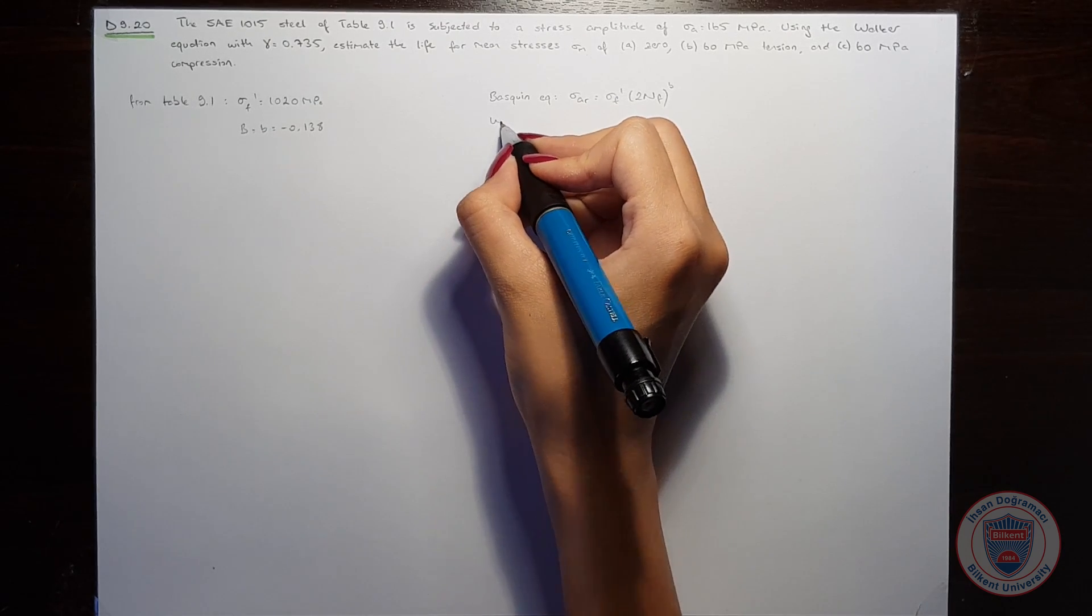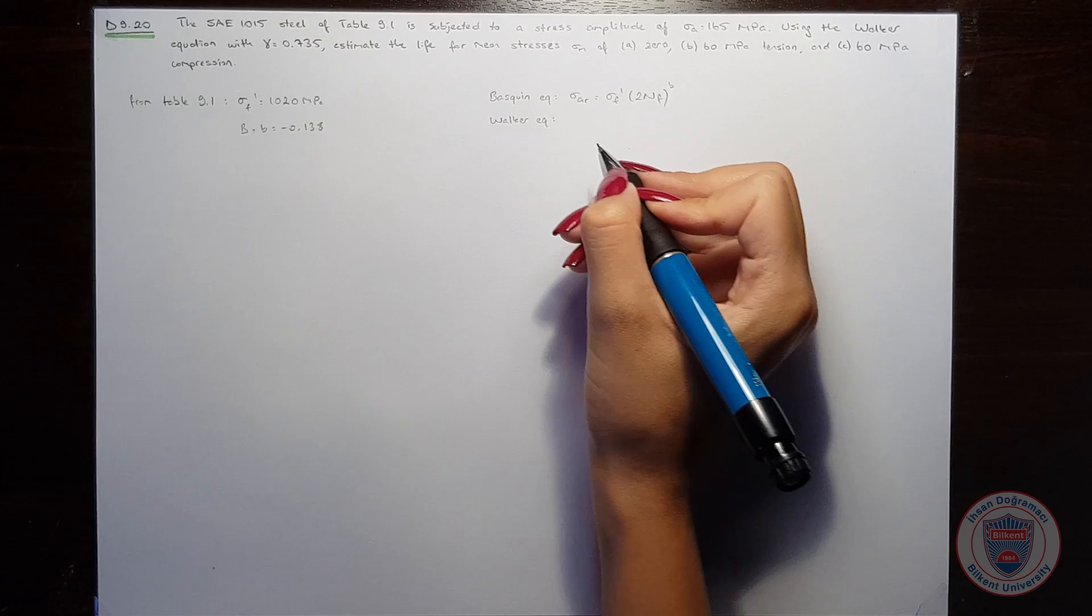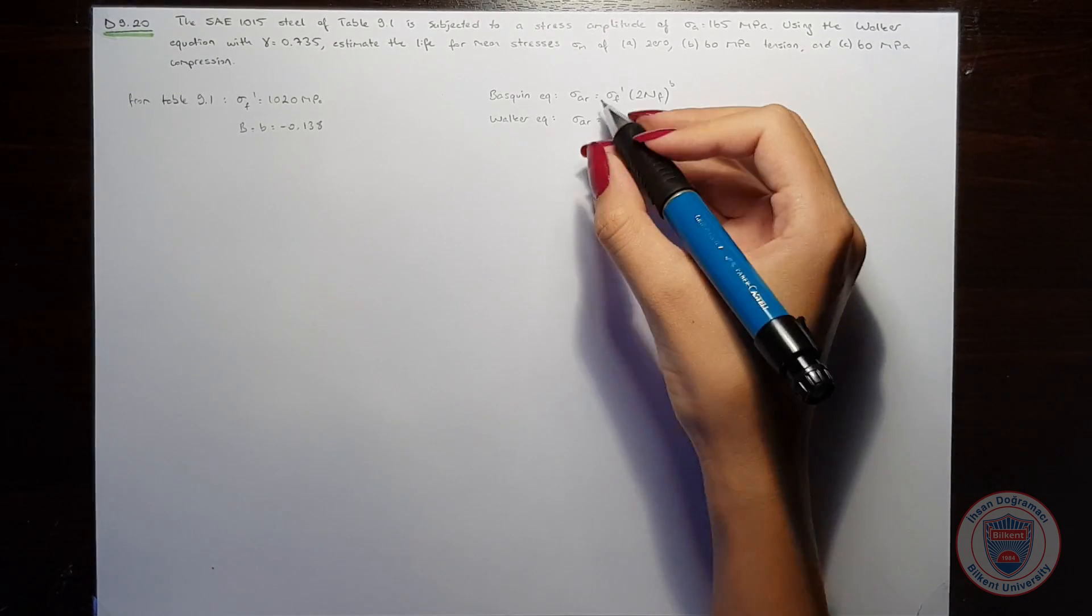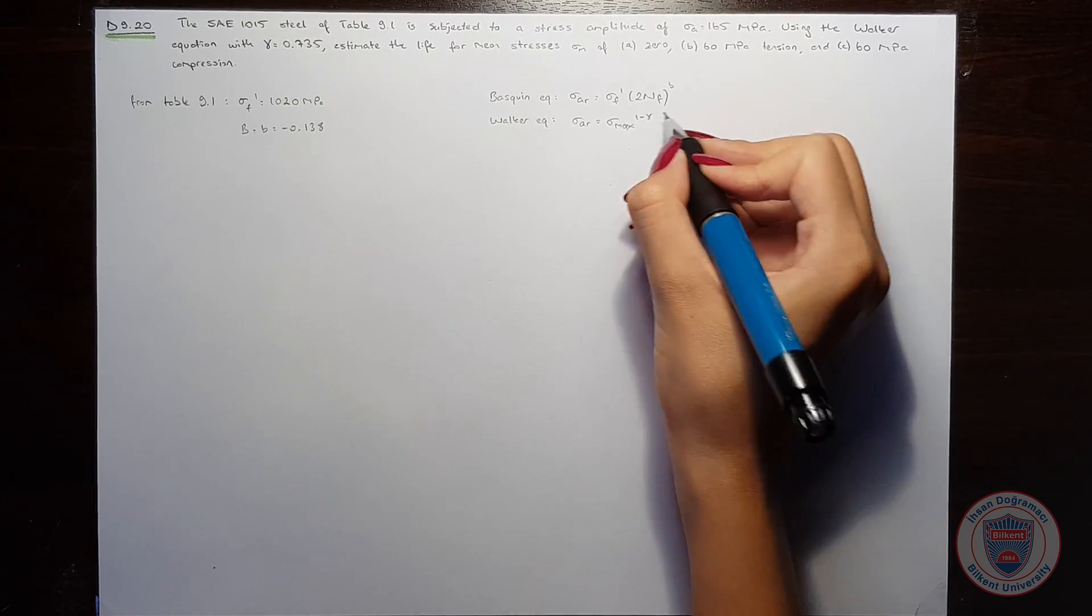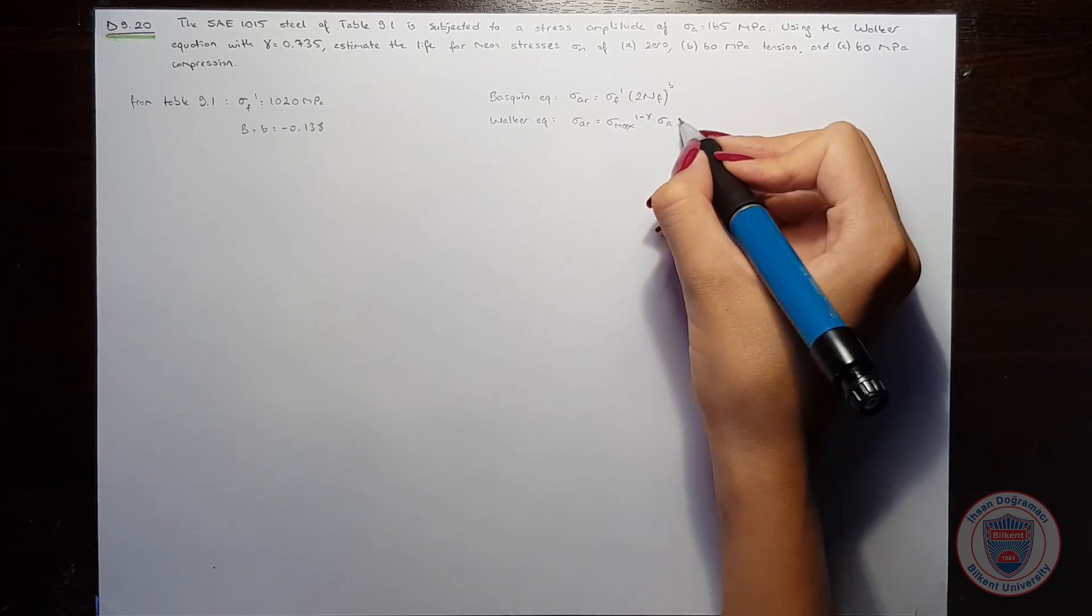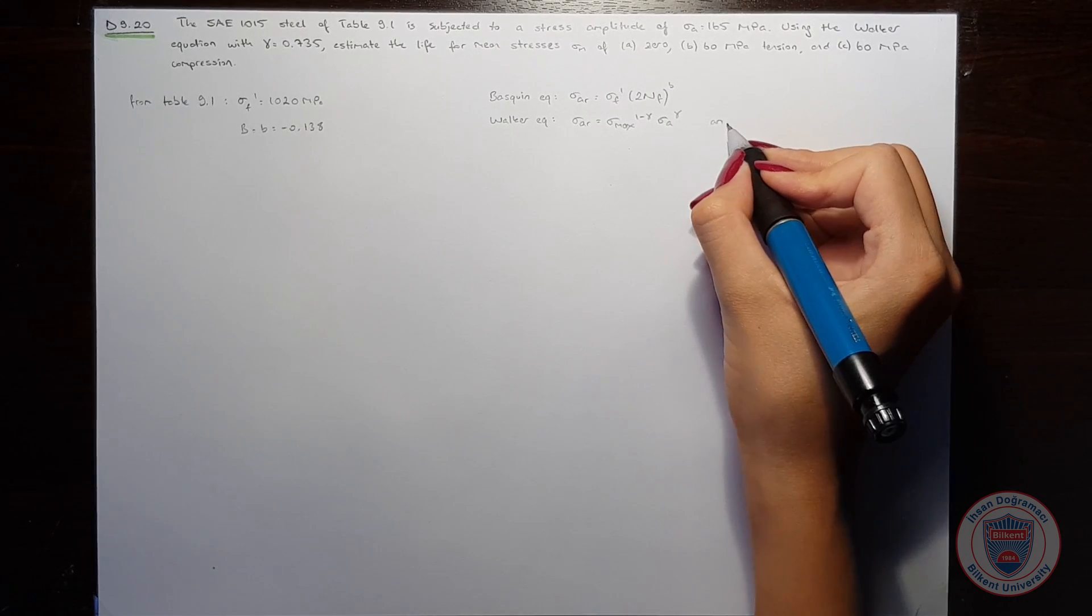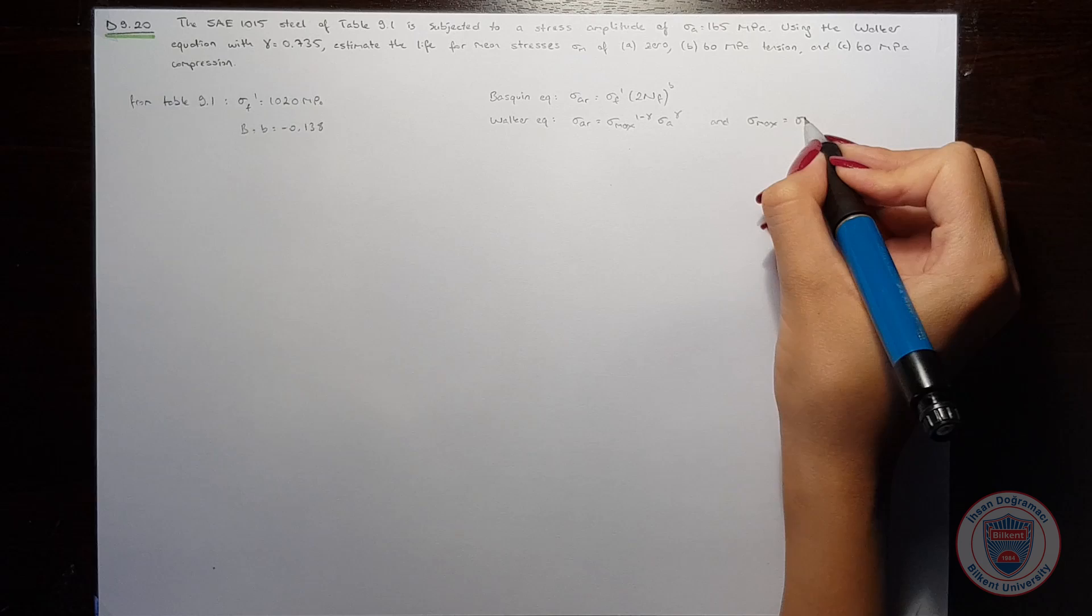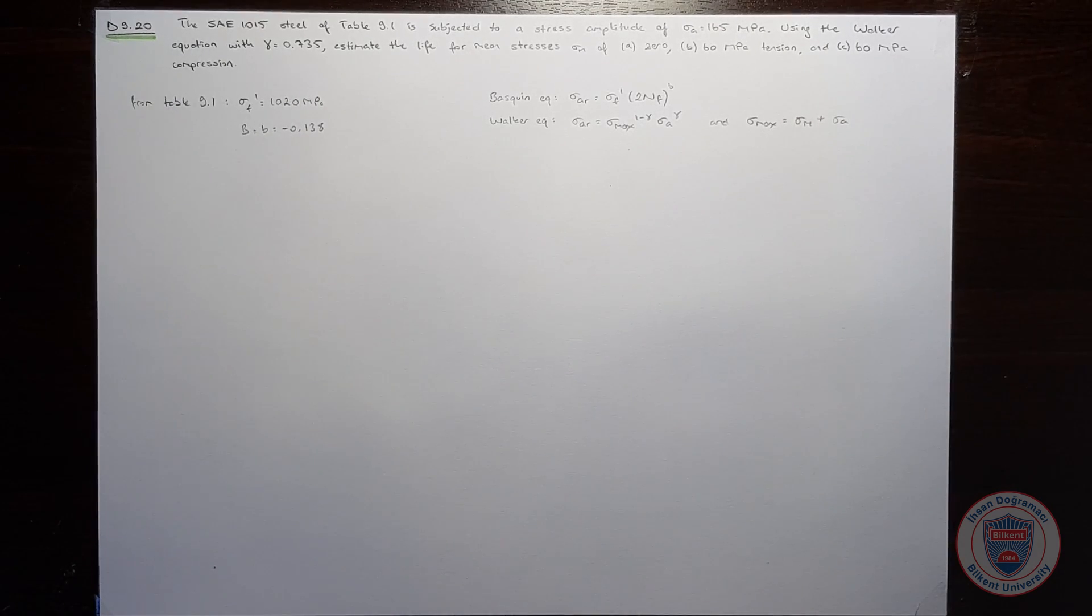According to the Volcker equation, sigma AR equals sigma max to the power of 1 minus gamma times sigma A to the power of gamma. We also know that sigma max equals the mean stress plus the stress amplitude.